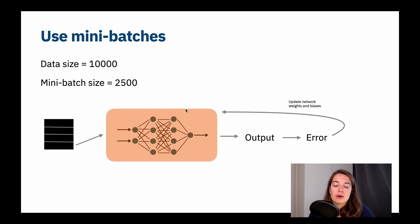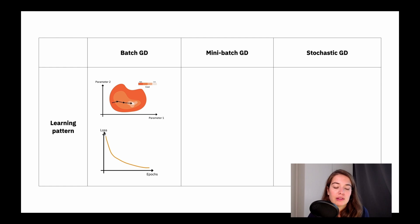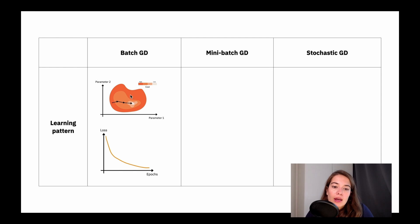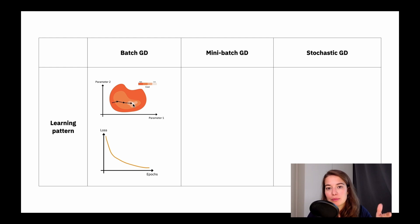Let's see how it looks while training. Batch gradient descent gives a very smooth learning curve — as you plot epochs vs. loss, you see a very smooth lowering of the training loss. On the cost landscape graph, the dark outer area represents high cost for parameter one and parameter two; lighter areas mean lower cost; and the lightest, nearly white area is the optimum minimum we're trying to achieve.